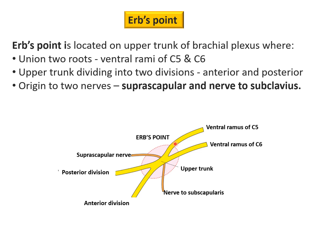The ventral rami of C5 and C6 join together to form the upper trunk, which then divides into two divisions: a posterior division and an anterior division. Two nerves can be seen arising from the upper trunk at Erb's point — these are the nerve to subscapularis and the suprascapular nerve.